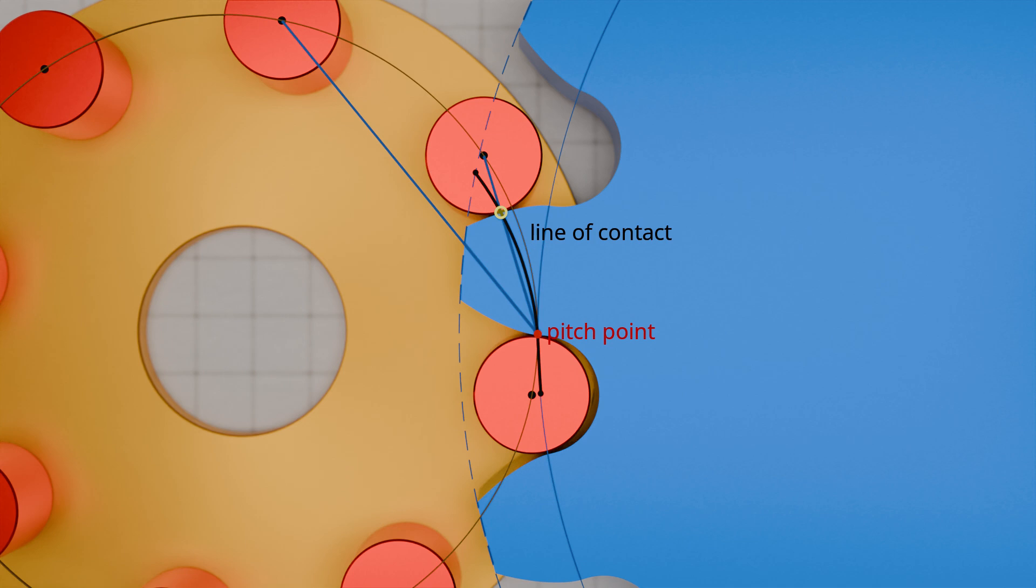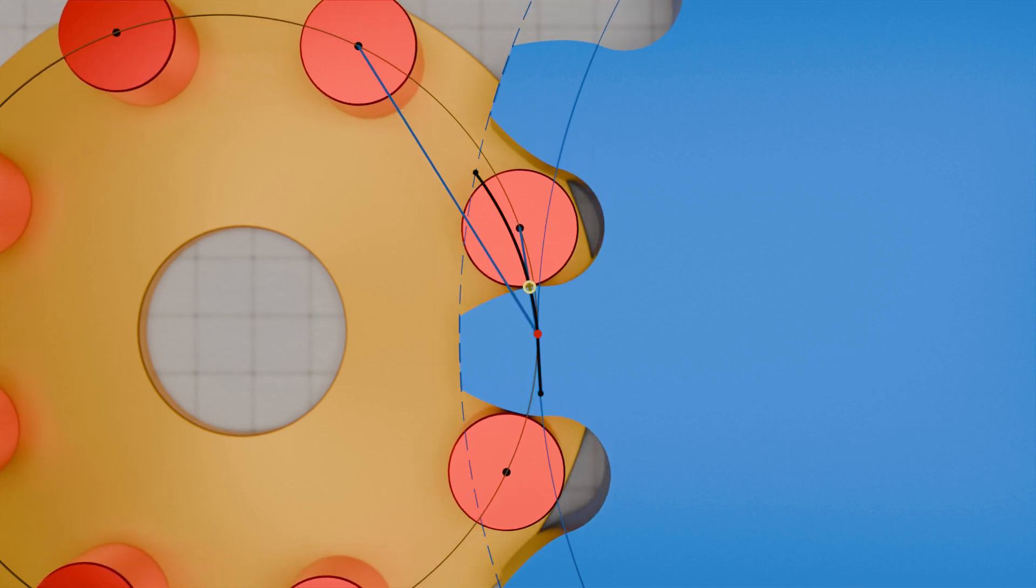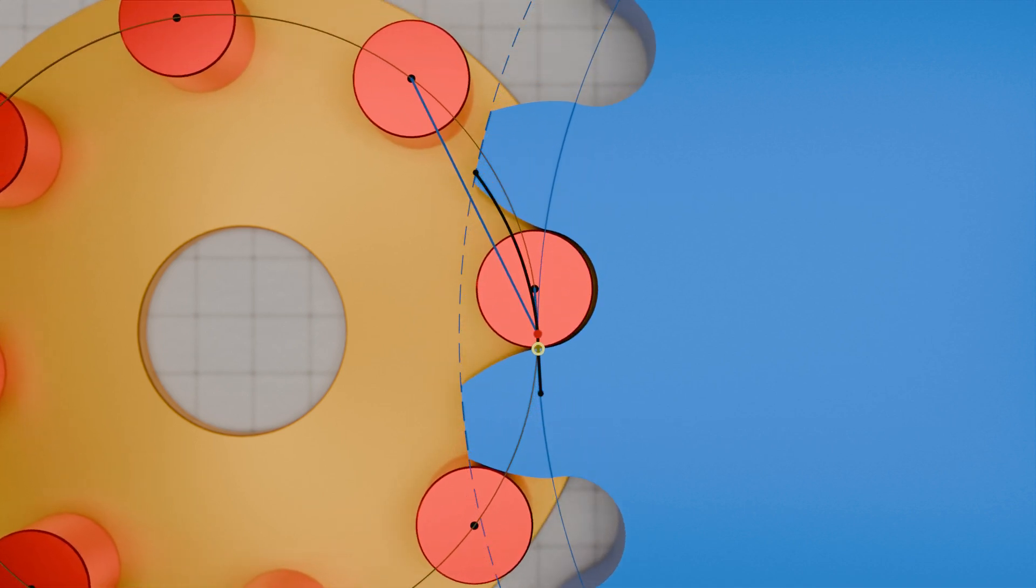The line of contact is determined by the intersection of the center line of the trundles and the pitch point with the circumference of the trundles themselves. This means that the direction of the force always passes through the pitch point and the general law of gearing for a constant transmission ratio is fulfilled.